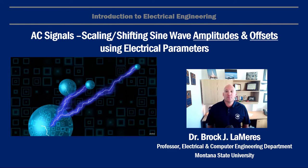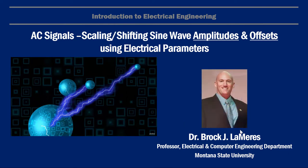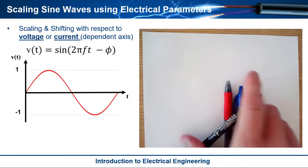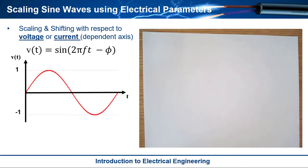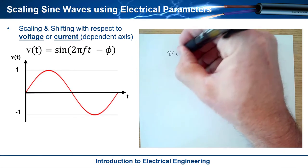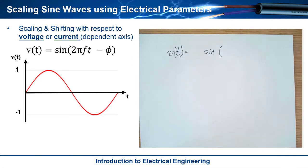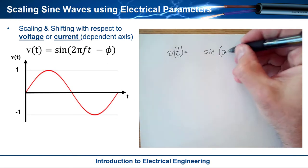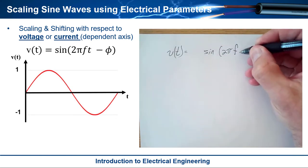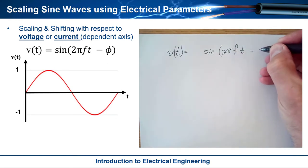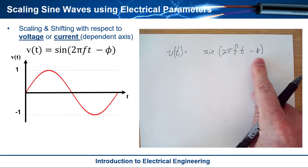And these final two transformations are scaling the amplitude and shifting the offset. So at this point we have our general expression for a sine wave that varies with time and that of course is going to be v(t) and then we say sine of and then the way we write it in electrical engineering is we say 2πft and then minus the phi.